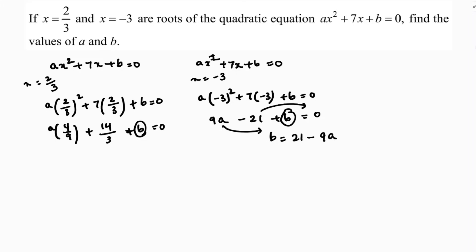This value, I will substitute over here. So, 4a by 9 plus 14 by 3 plus b. So, b value I will write in place of here. So, here 21 minus 9a is 0. Now, if I will simplify this further, variables one side, 4a by 9 minus 9a equals minus 21 minus 14 by 3.